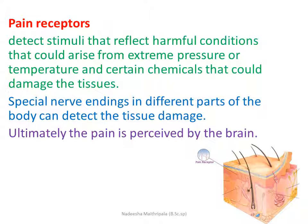Pain receptors detect stimuli that reflect harmful conditions arising from extreme pressure, extreme temperature, or certain chemicals that can damage tissue. Special nerve endings found mainly in our skin detect tissue damage, generate action potential, and send signals to the brain, where pain is ultimately perceived. These are the main types of sensory receptors covered in the syllabus.